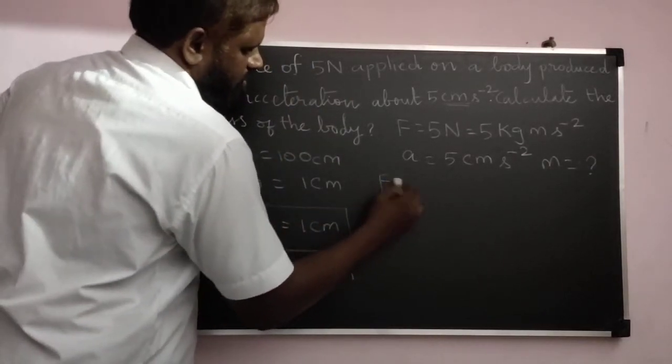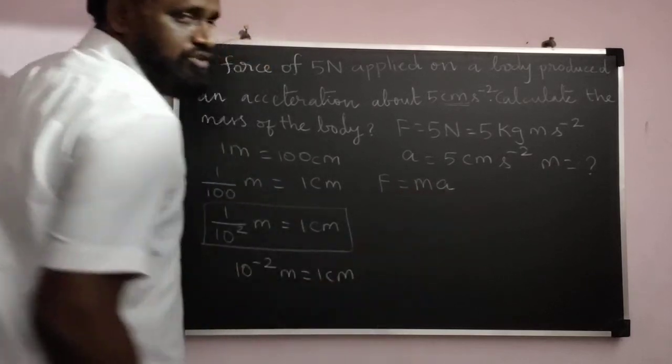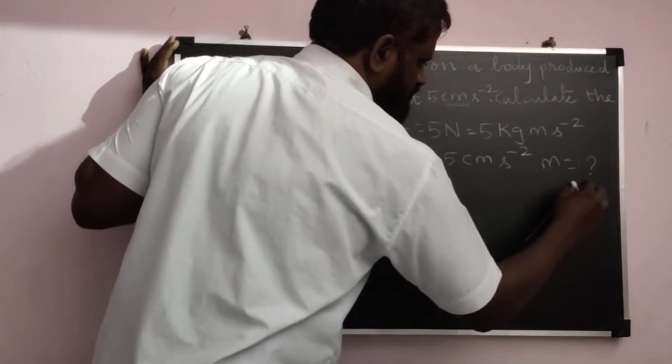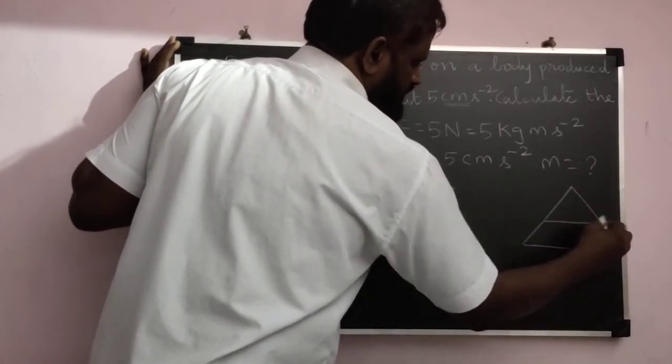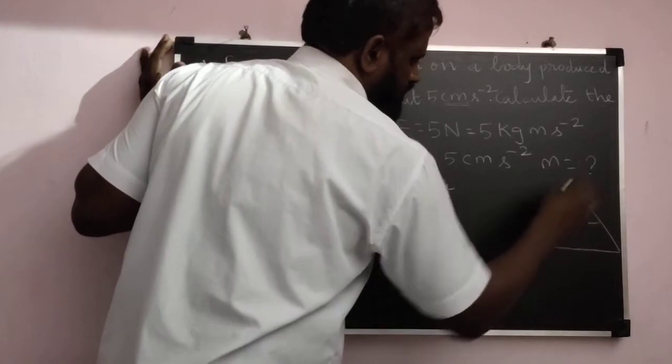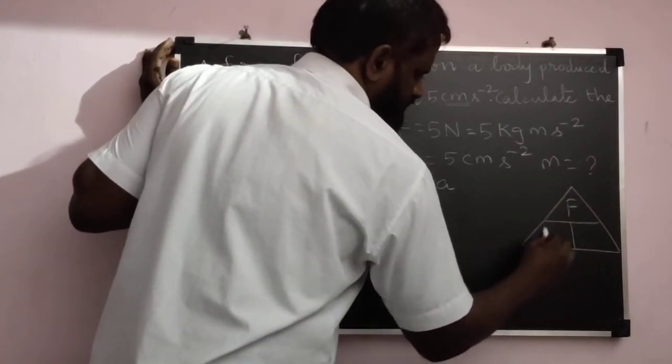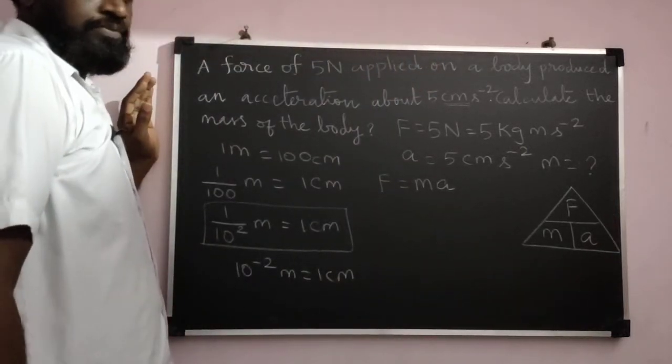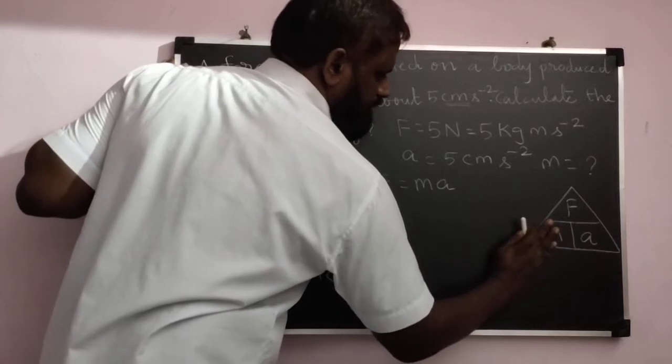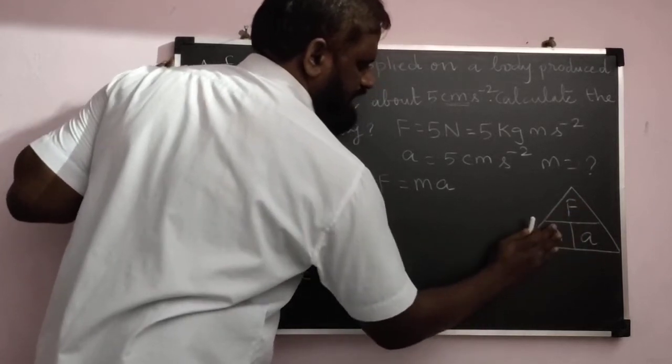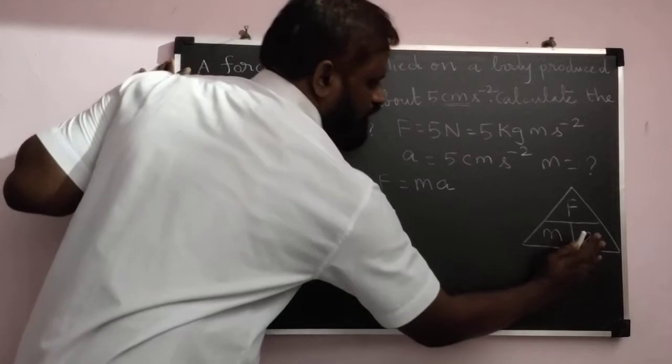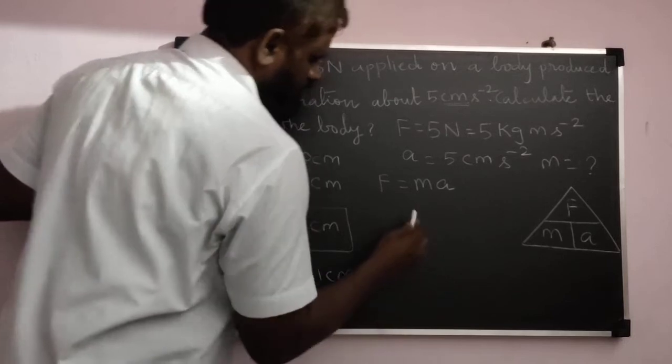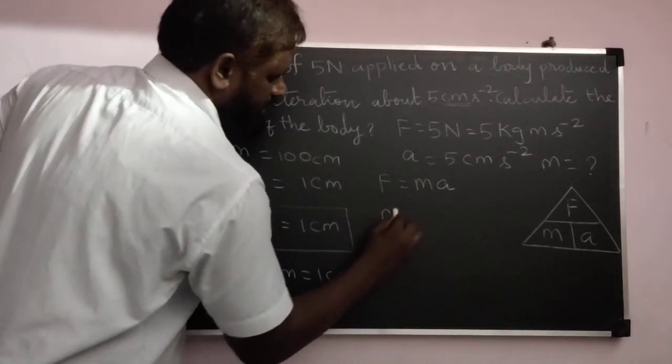What is the formula used here? Nothing but Newton's second law of motion: F is equal to M into A. To make this formula very easy, I'm going to draw a triangle. So F equals M into A. We need to find out M, so M is equal to F by A. If we want A, A is equal to F by M.